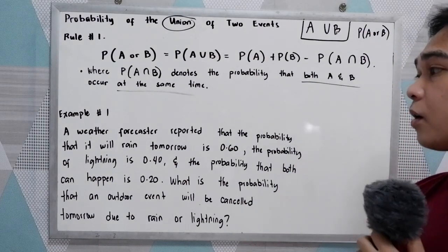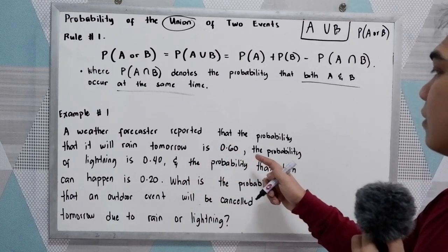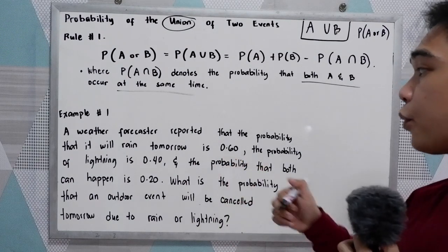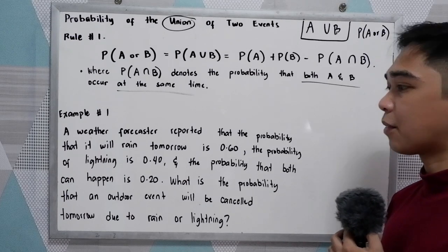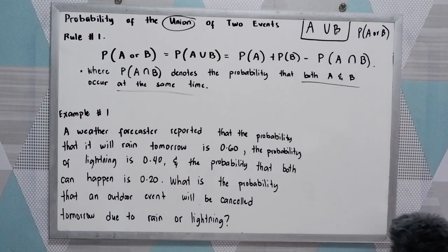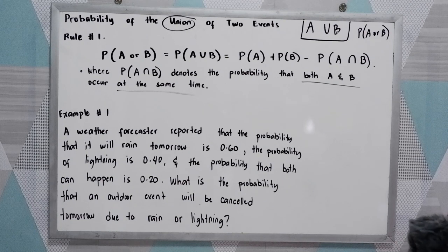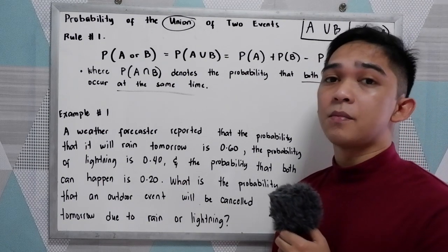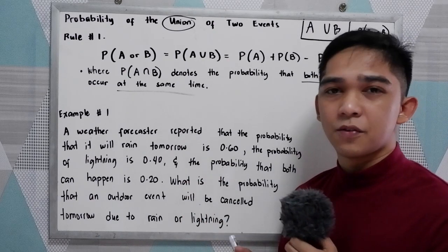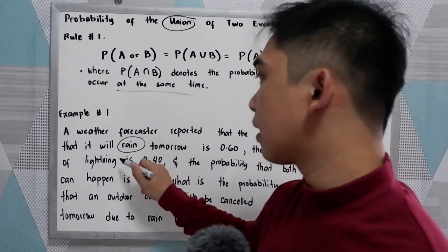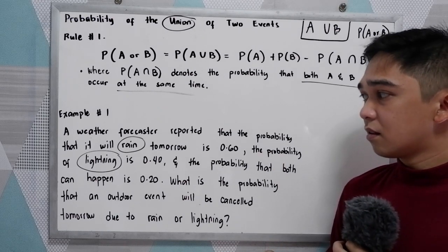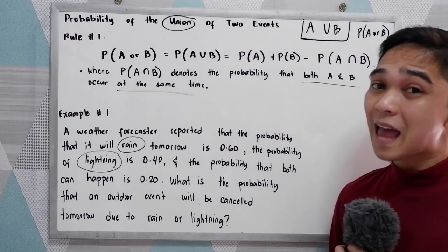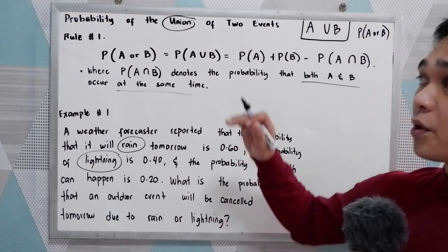Let's have our first example. A weather forecaster reported that the probability it will rain tomorrow is 0.60. The probability of lightning is 0.40. And the probability that both can happen is 0.20. What is the probability that an outdoor event will be cancelled tomorrow due to rain or lightning? First, we analyze if the problem is mutually exclusive or not. Rain and lightning — it's possible that if it rains, there will be lightning, so that is not mutually exclusive. We will use rule number one.